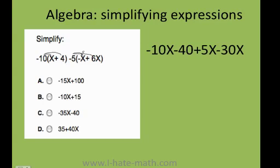Negative 5 times negative x becomes positive 5x, and then negative 5 times 6x is negative 30x. Now we need to put all the ones that belong together together. For example, negative 10x, 5x, and negative 30x can be mixed because they have an x.